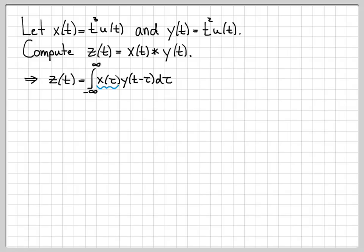Well, x of tau is just x of t with all the t's replaced by tau. So that's what it means to write down x of tau, replace all the t's with tau. So I've looked at my original definition of x of t, and I've written it down, but with all the t's replaced by tau.